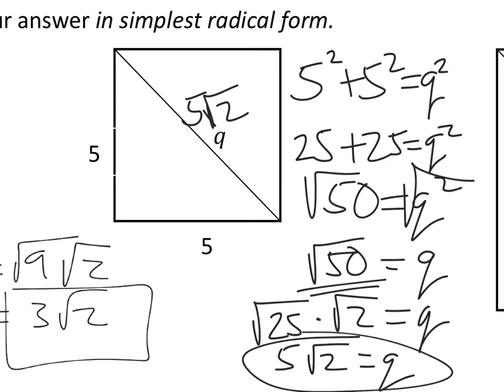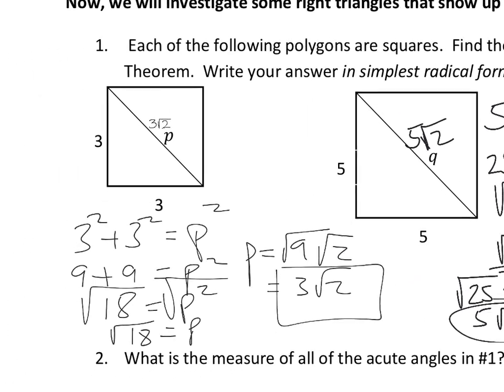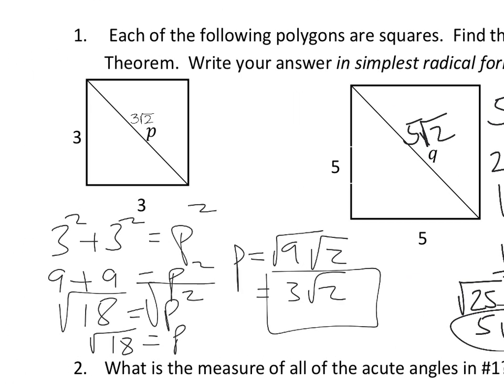Now we notice — is there a connection? Interesting, what's going on here? We've got 3 square root of 2 and 5 square root of 2. Well, that's our video for today; we're going to stop it there.